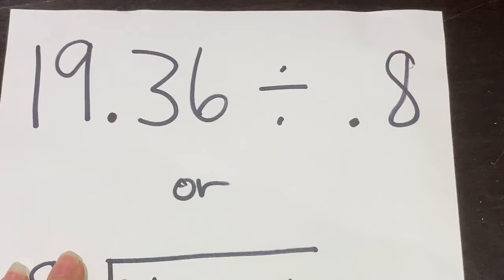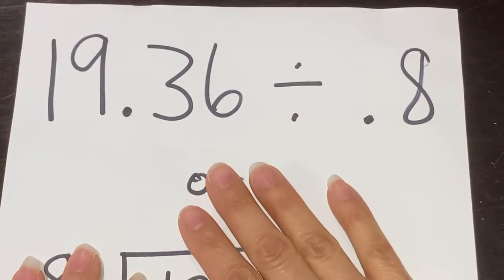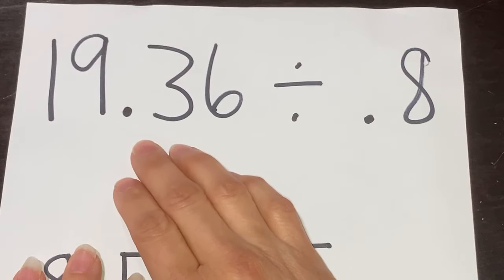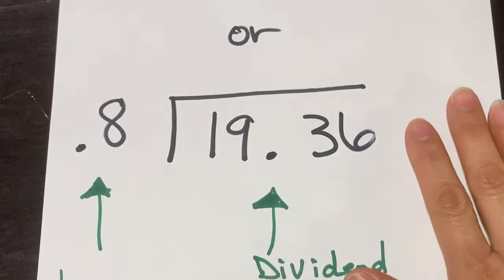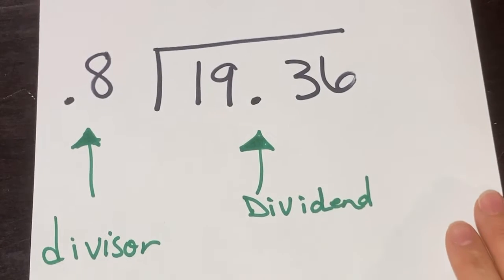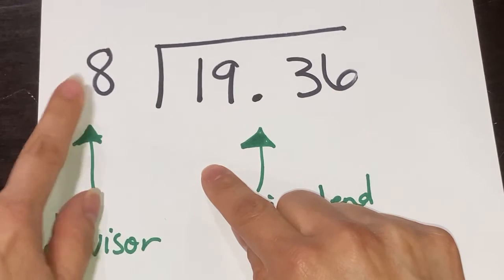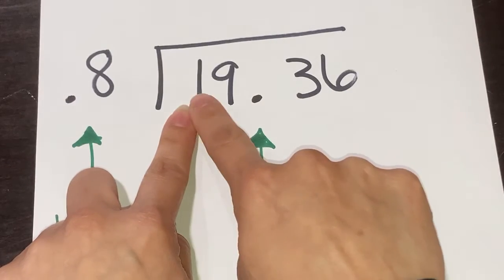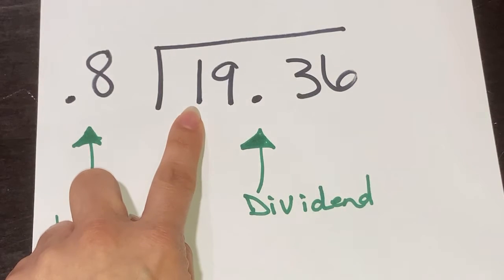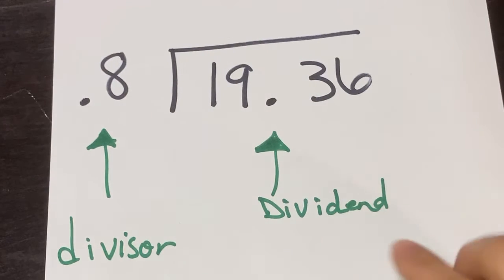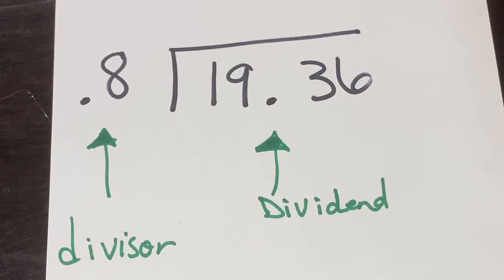There are two ways of writing this math problem. I have it listed as 19.36 divided by 0.8, or we could also visually see it as 0.8 with the division symbol and then 19.36. So on my dividend I have 19.36, and my divisor is 0.8.